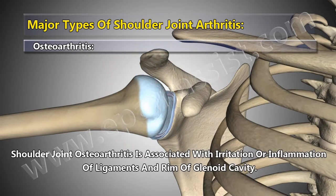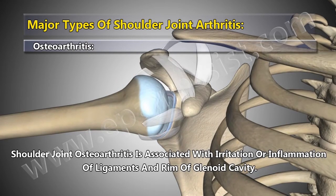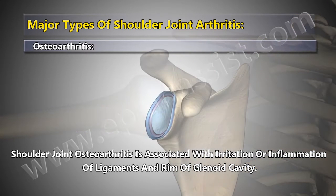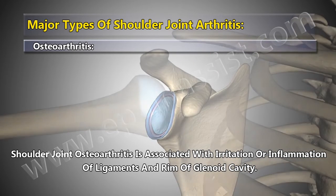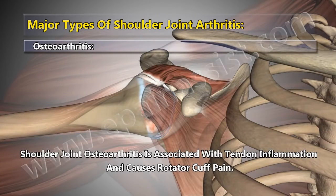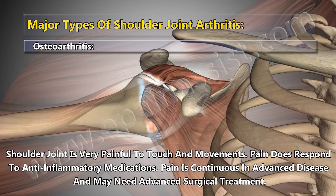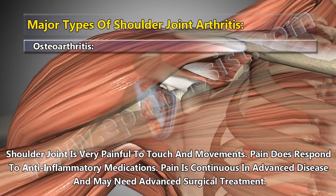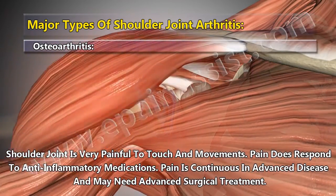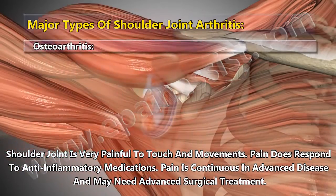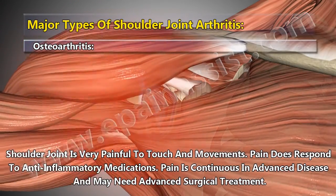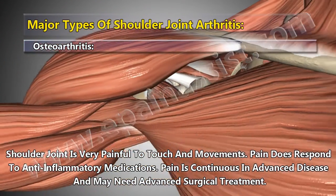Shoulder Joint Osteoarthritis is associated with irritation or inflammation of ligaments and the rim of the glenoid cavity, as well as tendon inflammation causing rotator cuff pain. The shoulder joint is very painful to touch and movement. Pain does respond to anti-inflammatory medications, but is continuous in advanced disease and may need advanced surgical treatment.